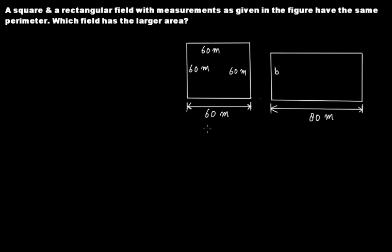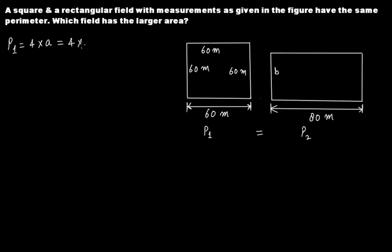Let's denote the perimeter of the square by P1 and the perimeter of the rectangle by P2. We know that P1 equals P2. P1 is 4 times A, where A is the length of a side of the square — that is 4 times 60 meters, which equals 240 meters.